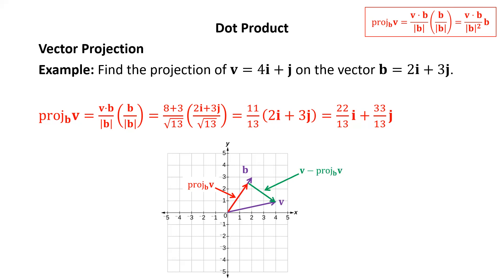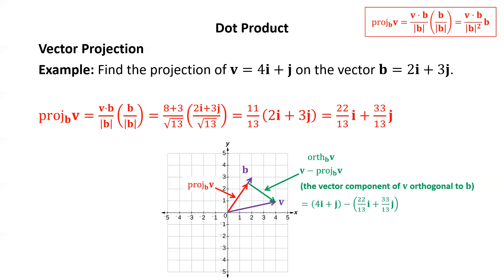There is also the vector component of v orthogonal to b, written orth_b(v). It equals v minus the projection of v onto b. Since v = 4i + j and the projection is (22/13)i + (33/13)j, we subtract to get (30/13)i - (20/13)j. This completes the decomposition: v is written as the sum of a component parallel to b (the projection) and a component orthogonal to b.